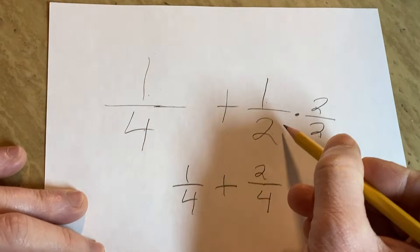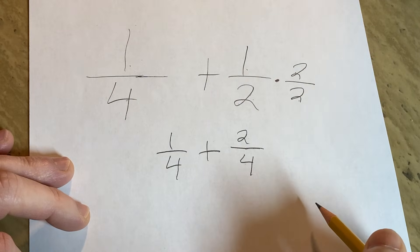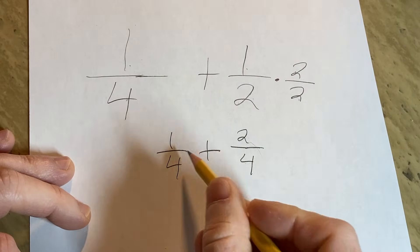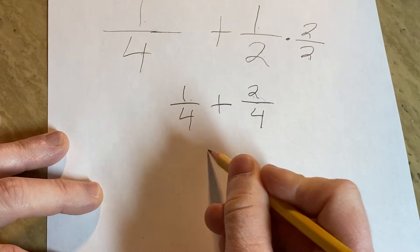Now be careful not to simplify here and go backwards. That's something that sometimes people do when they're first learning. So now you can add 1 plus 2, so you get 3.